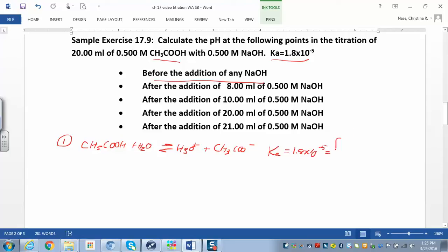Alright, so we can make an ICE table. For the ICE table, all we need is our initial molar concentration. We don't care about the volume, we just need the initial molar concentration, which is 0.5 molar. The ICE table looks like our usual ICE table. We don't have any hydronium to start off with, we don't have any of the acetate ion.